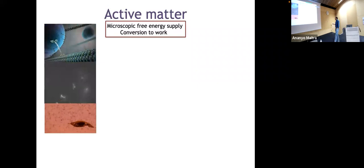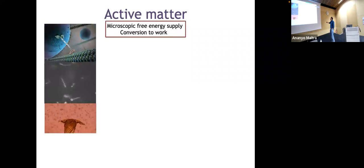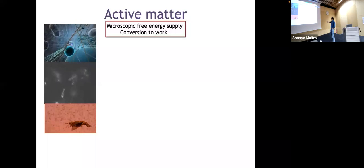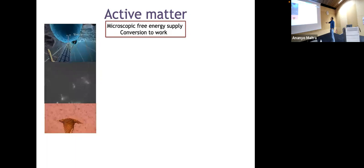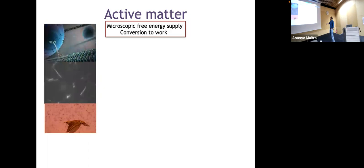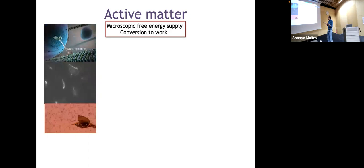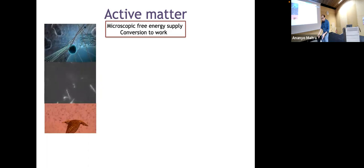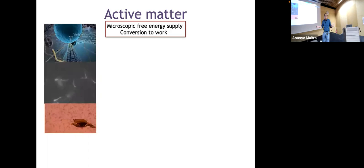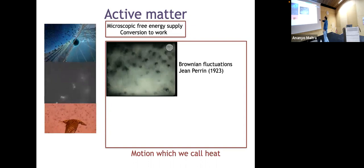In all these cases, these objects take up energy from an ambient fuel tank — as for intracellular things or for the bird — and convert that into some form of motion. But motion is common, so what is the difference between this kind of motion and the kind you'd see if you took a powerful enough microscope and looked at molecules on a table jiggling continuously?